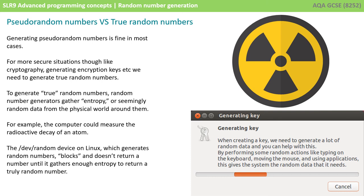Now, to generate a true random number, we require what's known as entropy. In other words, seemingly random data from the physical world. It can't be anything generated by the computer internally.